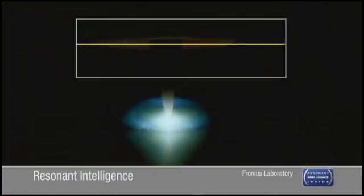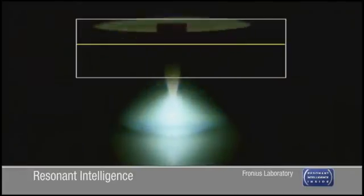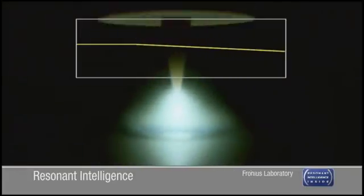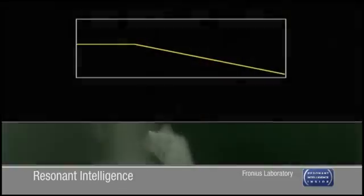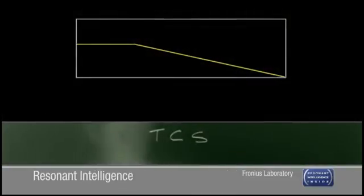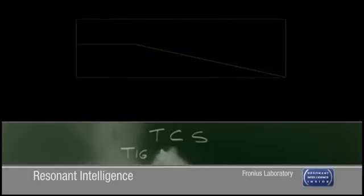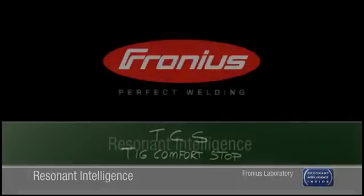And here's something else that's new. When you're TIG welding, the welding current automatically drops at the end of welding. This cures the arc of its annoying habit of breaking at the end of the weld. A really handy feature that we've called TIG Comfort Stop.